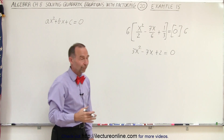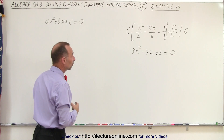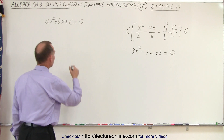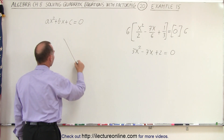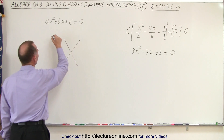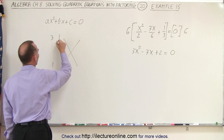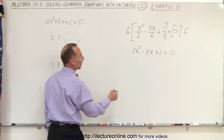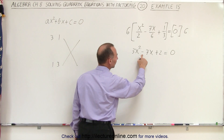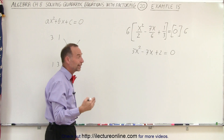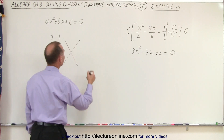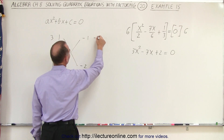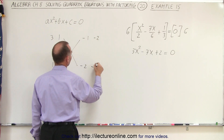And now we have something in a more standard form, which we can then factor. We may want to use the FOIL method. On the left side, the combinations are 3 and 1, or 1 and 3. On the right side, notice we have a negative here and a positive there. That means both must be negative. And so that could either be negative 1, negative 2, or negative 2 and negative 1.